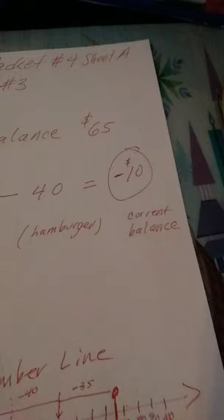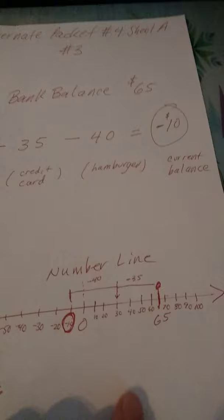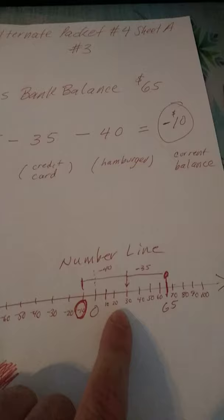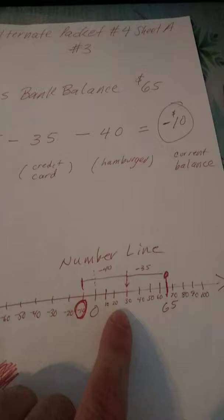So you can see here on the number line, the answer is negative $10 — current balance. Here on the number line, he started at $65. Minus $35, he went to $30. Minus $40 again, he goes all the way down the number line past zero, and then it brings you to negative $10. That's your answer.